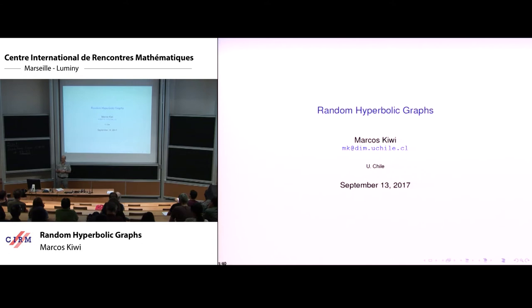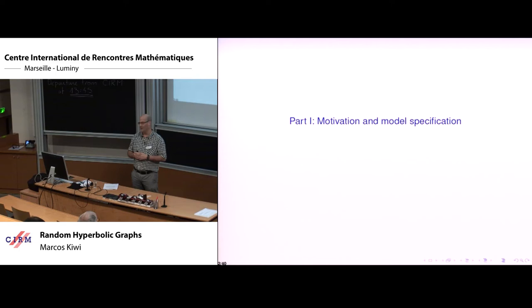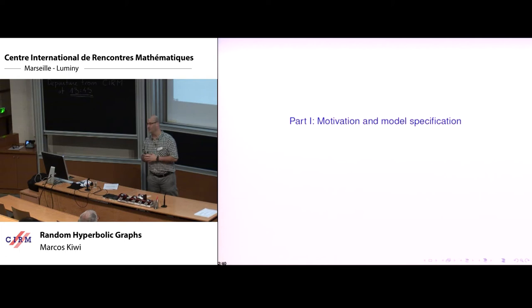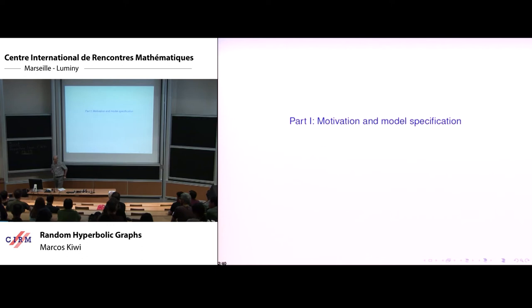Thanks to the organizers for the invitation. I'm very glad to be here and have the opportunity to tell you about a recently proposed model of random graphs which has caught a lot of interest. The model is called random hyperbolic graphs. I'll describe the model slowly and convince you it's interesting — I'm assuming essentially nobody has heard about them before.